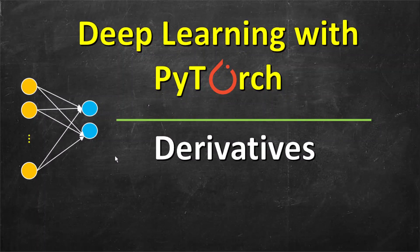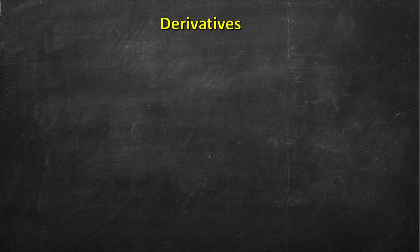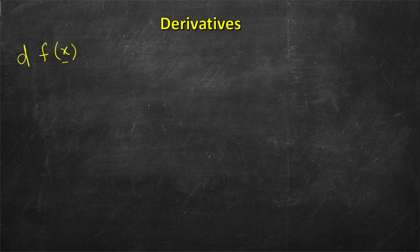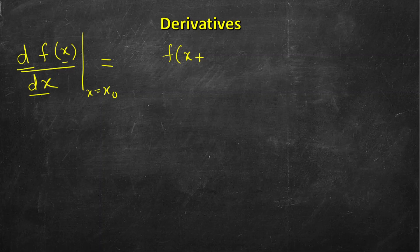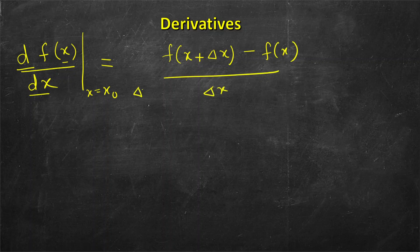In this lesson we will talk about derivatives in PyTorch. Derivatives are used while updating the parameters of the neural network. Let's start with the definition of derivatives in mathematics. By first principles, if we have a function f of a variable x and we want to find the derivative of f with respect to x, it's defined as f(x + delta_x) minus f(x) divided by delta_x, where delta_x is infinitesimally small.